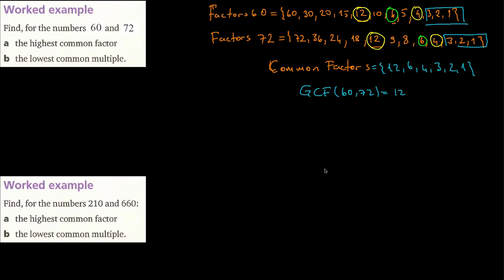First, I'll show how to find the GCF using prime factorization. I'm going to write 60 and 72 and divide both numbers using prime numbers. The smallest prime number is 2. Dividing both by 2: 60 becomes 30, and 72 becomes 36. Two still divides both, so we divide again.